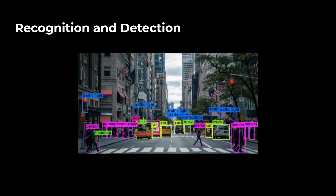We'll talk about a few tasks in computer vision. The most obvious is recognition and detection — you've probably seen MNIST classification of handwritten digits. Given an image, you want to detect and classify what's inside. You can make this more complex: images often contain multiple objects and classes, so you want to detect where each object is and also classify it. That's what those bounding boxes represent — each color corresponds to a class.